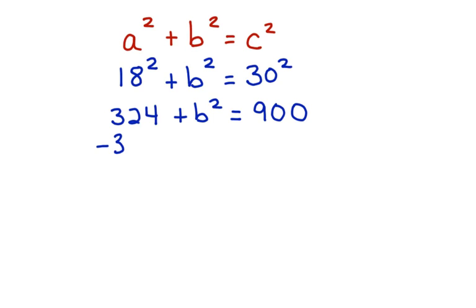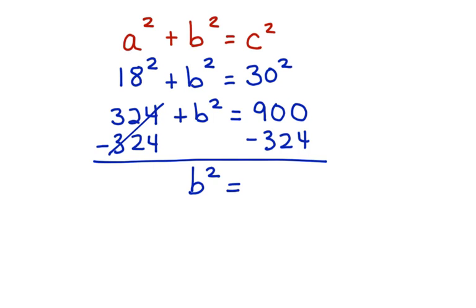If we subtract 324 from both sides, because we want to get the B squared alone, these cancel. Bring down B squared, which is equal to 576.